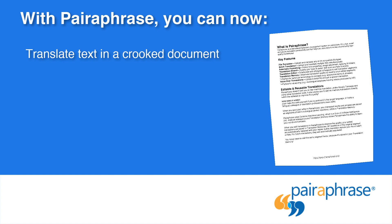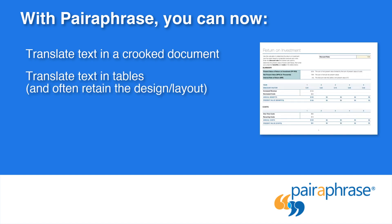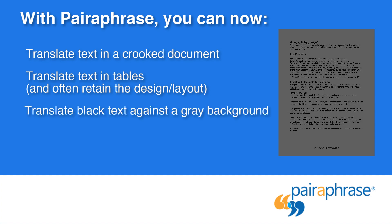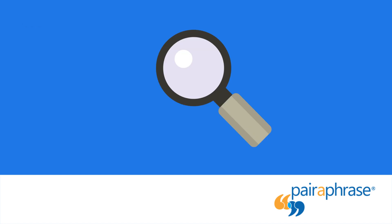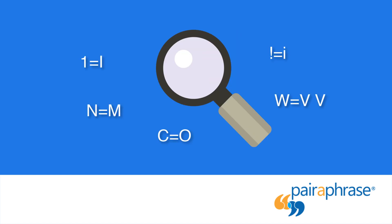Translate text in a crooked document. Translate text within tables and, in many cases, retain the table design and layout. Translate black text against a grey background. While our OCR has dramatically improved, there are still ways that your text can be misread in the scanned document you attempt to translate with Paraphrase.